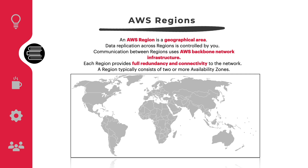The AWS global infrastructure is built around regions. AWS has 22 regions worldwide. An AWS region is a physical geographical location with one or more availability zones. Availability zones consist of one or more data centers.